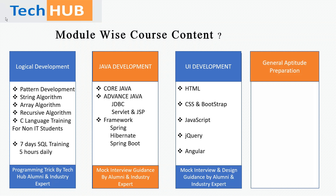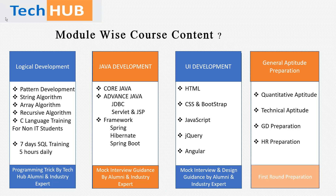We also have a module for General Application Preparation. We designed this module because to place candidates, they first need to clear the initial round, where companies typically ask quantitative aptitude and technical aptitude questions. Technical aptitude normally includes MCQ questions on C, data structures, and SQL. So we provide training in quantitative aptitude, technical aptitude, GD preparation, and HR preparation. The purpose of this module is to help candidates clear the first round.